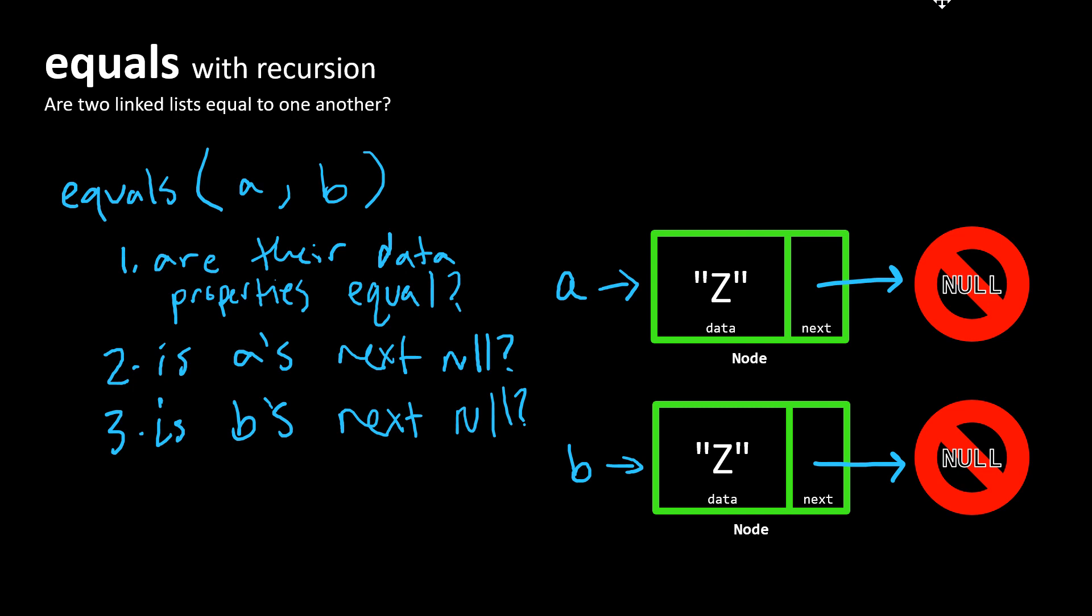And this is how we would determine that two nodes are equal to one another when we're dealing with lists who have a length of one. So you can imagine if this was Y.